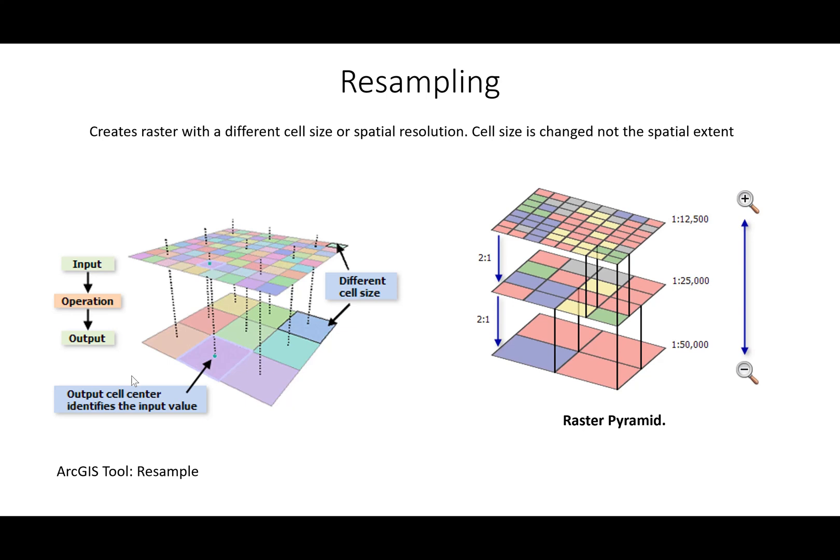Resampling creates a raster with a different cell size or spatial resolution. This is done when you don't want to work with the available resolution. If datasets have a very fine spatial resolution that takes too long to process, you can increase the cell size — for example, changing from 1 meter to 10 or 30 meters significantly reduces computational time. The tool in ArcGIS for resampling is the Resample tool.